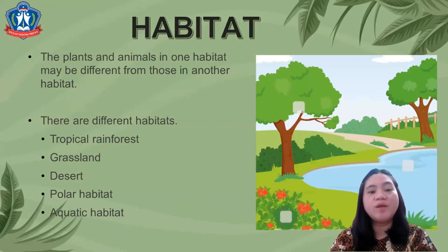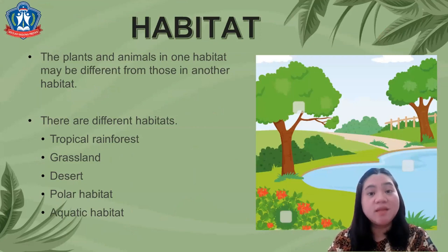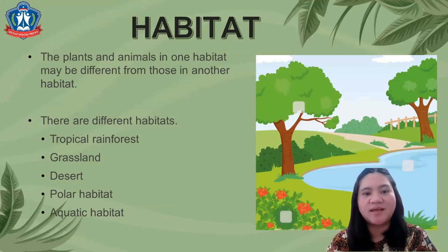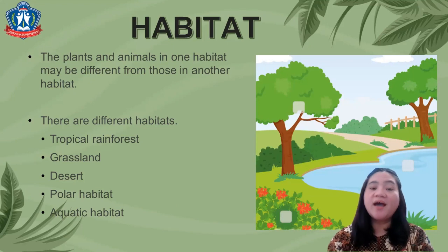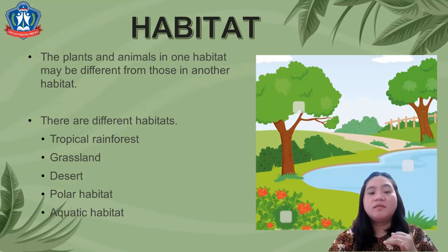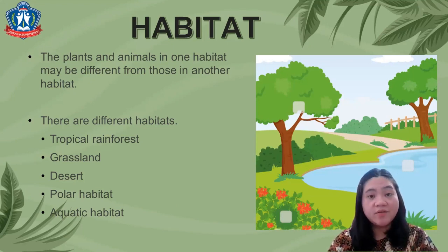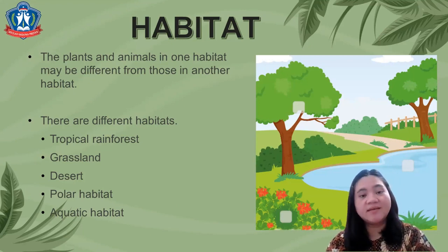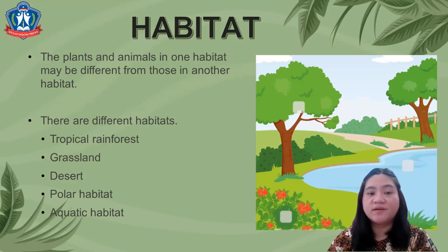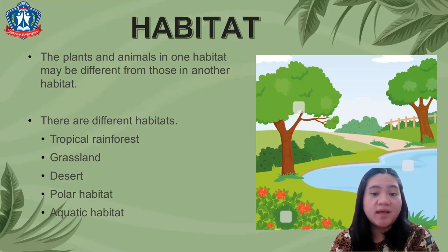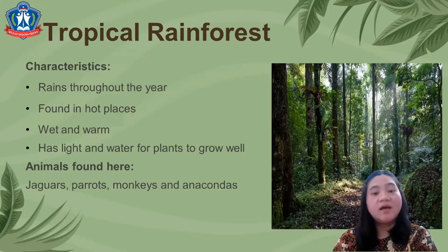As we know, the plants and animals in one habitat may be different from those in another habitat. There are different habitats: tropical rainforest, grassland, desert, polar habitat, and aquatic habitat.